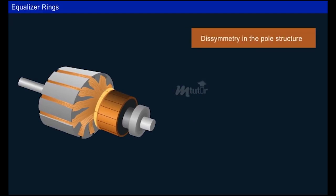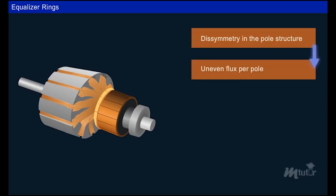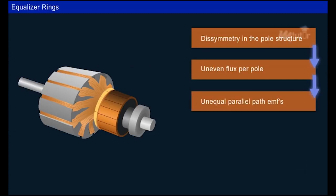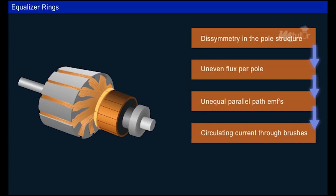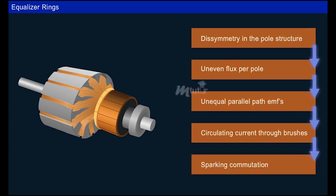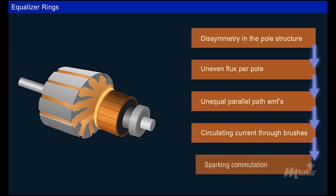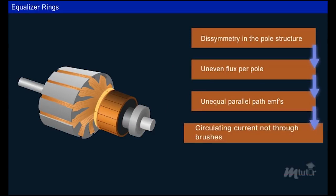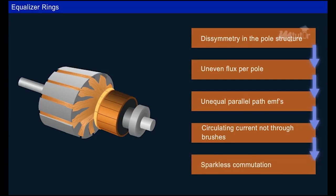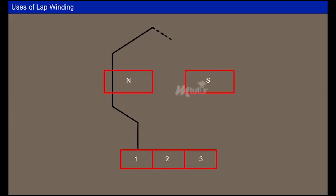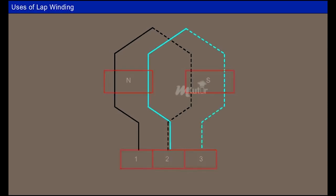These terminologies are essential to design armature windings in DC machines. Due to possible dissymmetry in the pole structure, there is uneven distribution of flux per pole and EMF in the parallel paths, causing unequal circulating currents through the brushes, leading to overheating and severe sparking during commutation. Hence, equalizer rings are used to avoid such overheating and sparking. Equalizer rings route the circulating current to the coil itself and help produce equal EMF in the parallel paths, resulting in sparkless commutation.